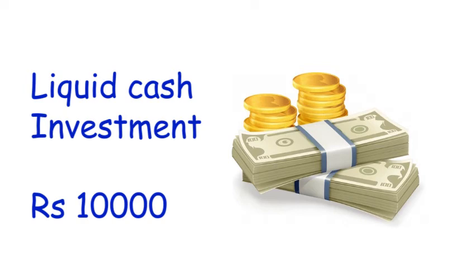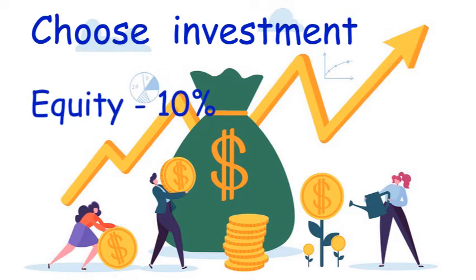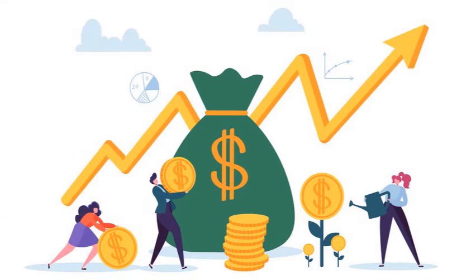I should be able to access it at any time. Now I should choose the investment vehicles where the minimum returns must be from equities 10%, from debts 5%, and liquid cash 3%. I have chosen the investment.